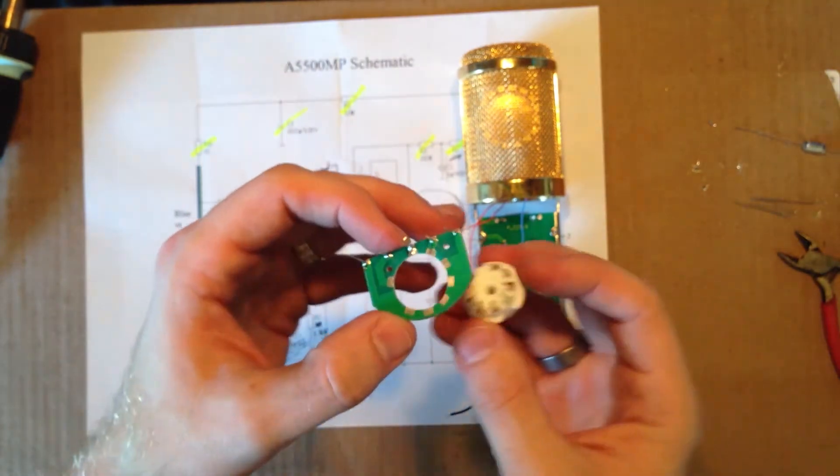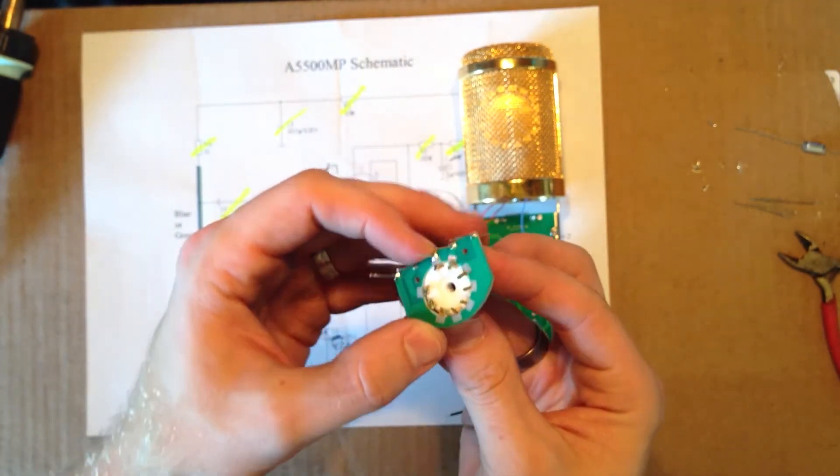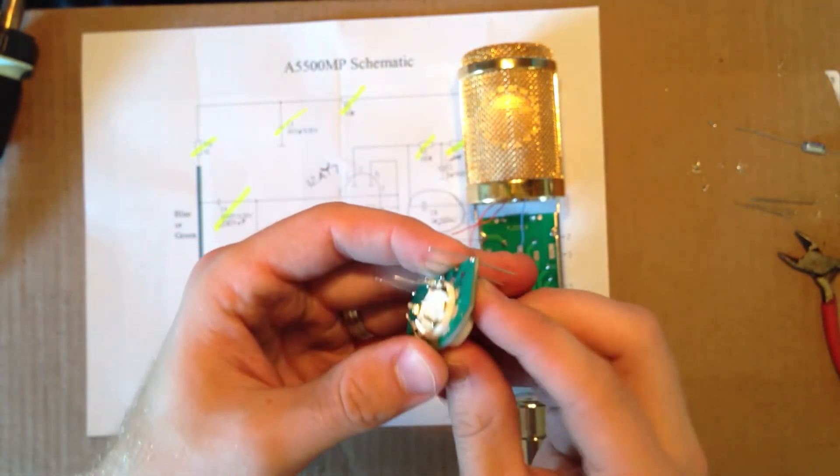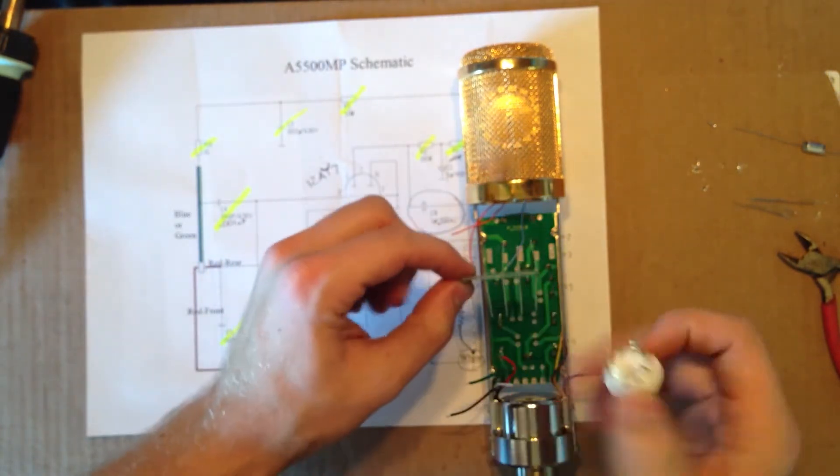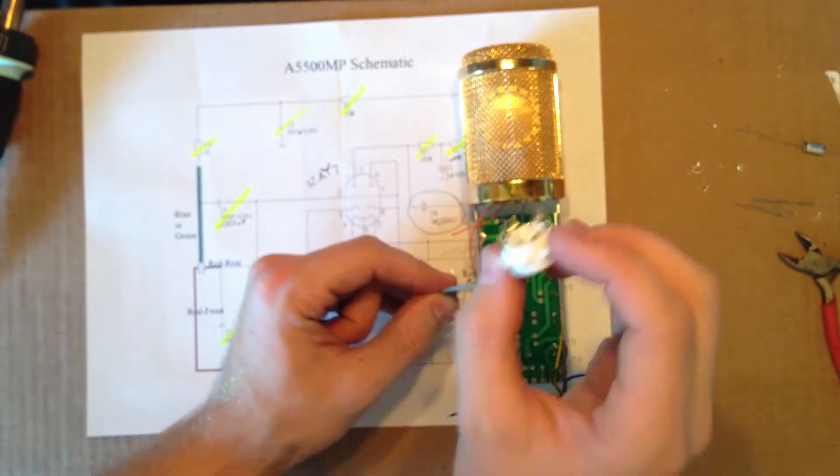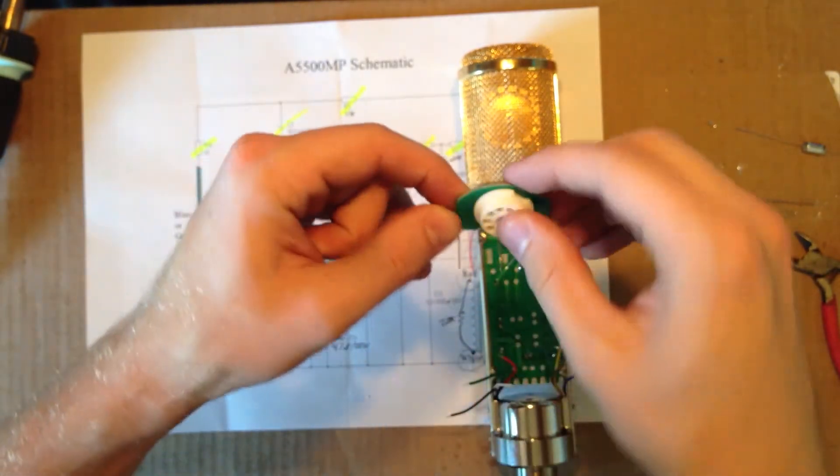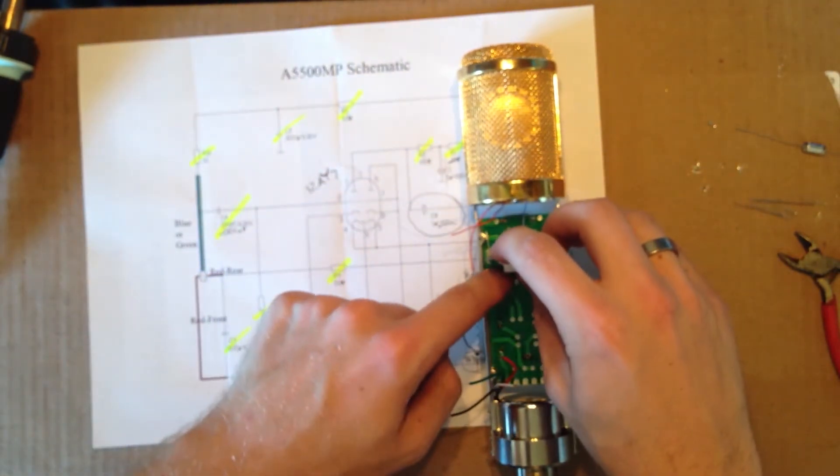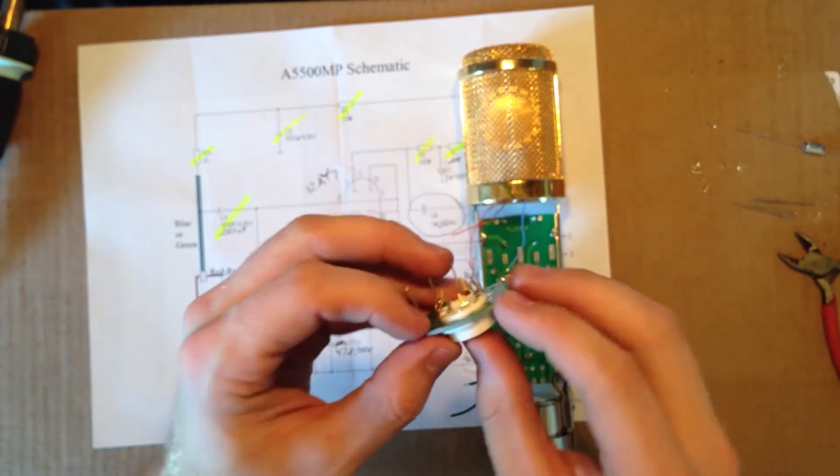And then once that's situated in there, then we'll go ahead and add in this part. That way we can solder these before we put this on. Because if we soldered this on before, then we wouldn't really be able to get in there with our soldering iron cleanly to solder those on.